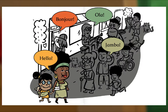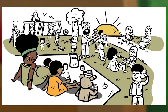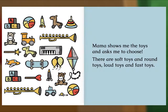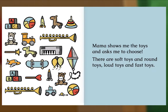Hello, bonjour, hola, jumbo! In a big store we fill a cart with food — boxes of cereals and sacks of fruit, bags of flour and bottles of juice. Mama shows me the toys and asks me to choose. There are soft toys and round toys, loud toys and fast toys.